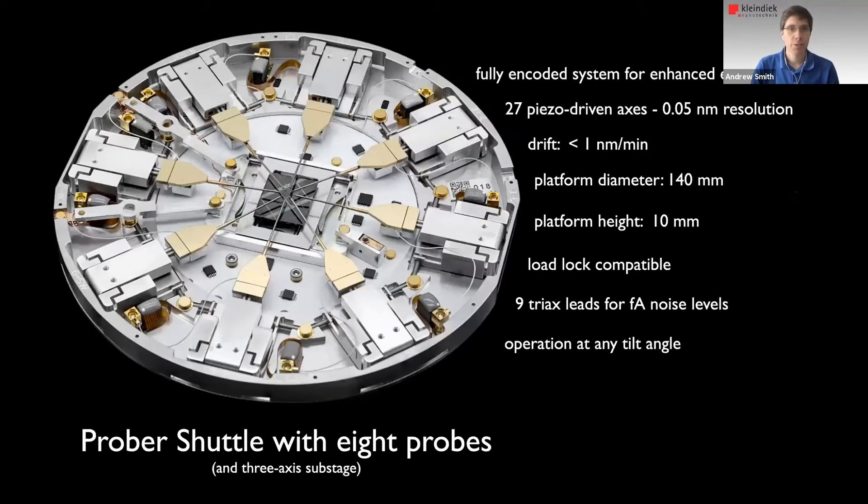The tool that I'd like to introduce for this is what we call a Prober Shuttle. The latest generation is fully encoded. It has 27 piezo-driven axes with 0.05 nanometer step size. We specify a drift of less than one nanometer per minute. The platforms I mentioned are such that it can fit through many load lock systems, so you can introduce the whole platform as well as a sample into the microscope chamber via the load lock. You don't have to vent the main chamber, and this goes in the vein of keeping things clean. We use triac leads, of course, so we get very low noise levels and we can operate at tilt angles.